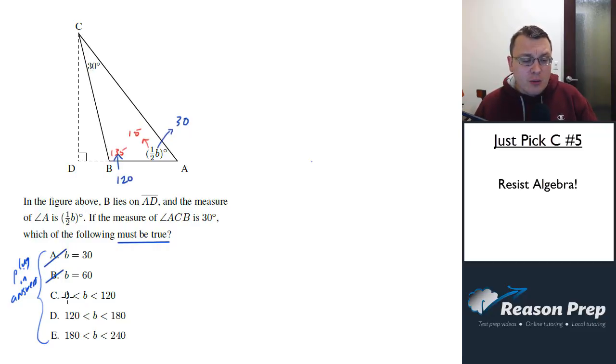So even though A or B could be true, we're looking for the ones that must be true. Let's test some values here. Here we're given B is between zero and 120, so let's just pick a B value. Let's say B is, I don't know, 40. If B were 40, then if we plug this in we would say okay, this would be 20, which means this would add up to 50, which means this would be 130.